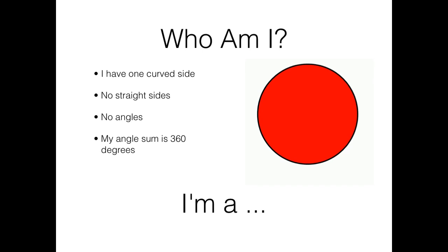Who am I? I have one curved side. Just like Oguki. No straight sides. No angles. And my angle sum is 360 degrees. I'm a Circle.